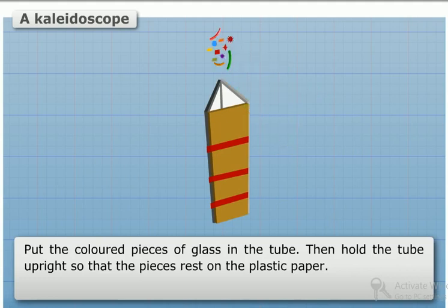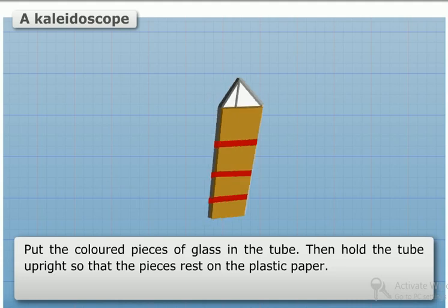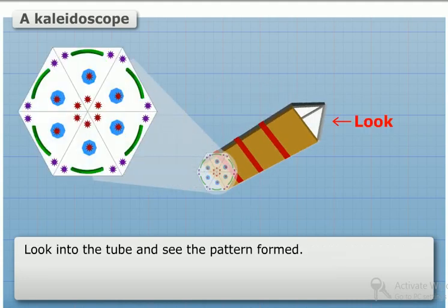Put the colored pieces of glass in the tube. Hold the tube upright so that the pieces rest on the plastic paper. Look into the tube and see the pattern formed.